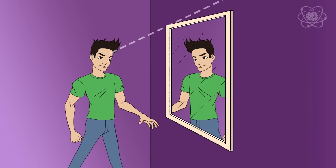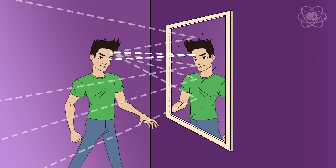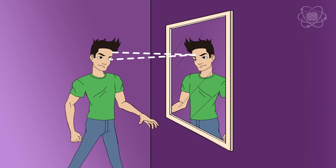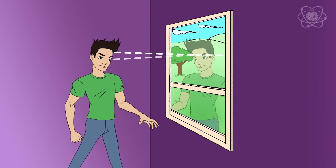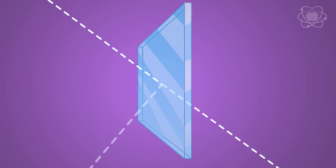Reflection is what lets you see yourself in a mirror. Light hits your face, scatters away in all directions, and when that light hits a mirror, some of it is reflected back into your eyes. But when you look at your reflection in a window, you look transparent. This is because some of the light reflects back, but not as much as a mirror. Whenever light goes from one clear substance into another, some of the light is reflected if the speed of light is different in the two substances.